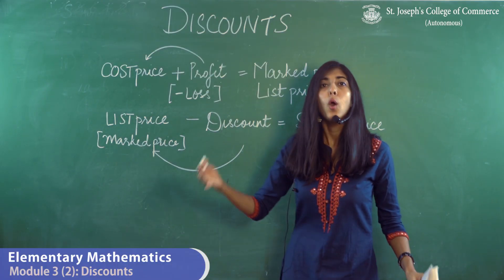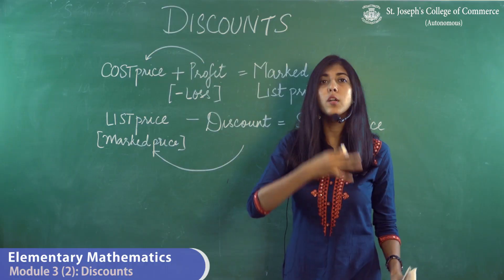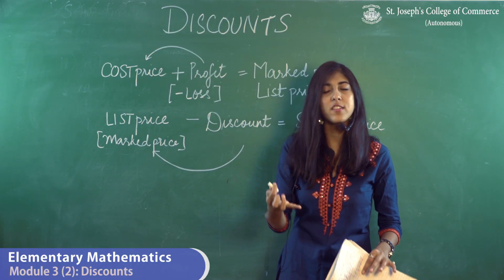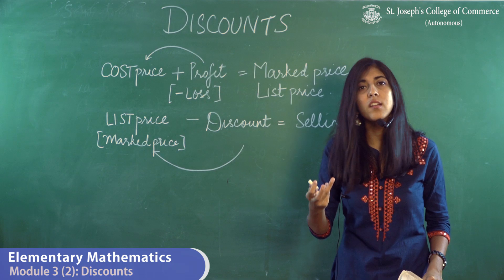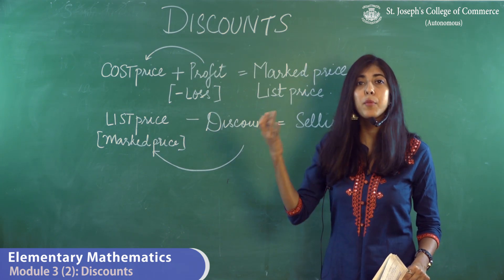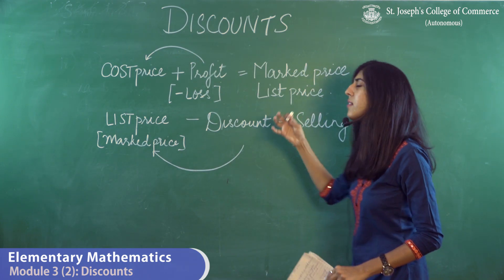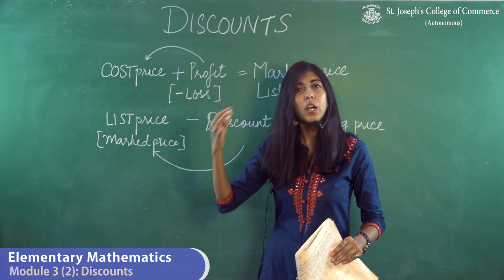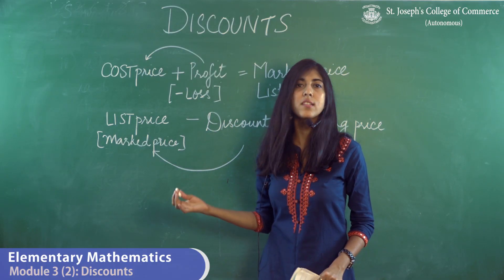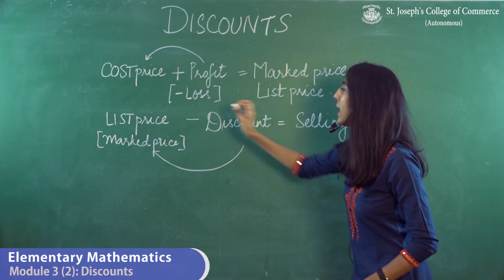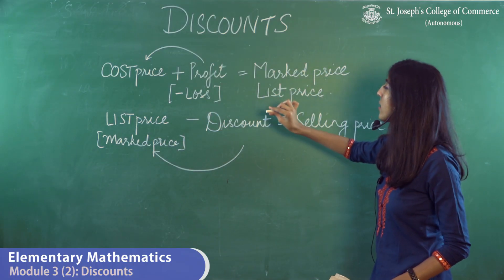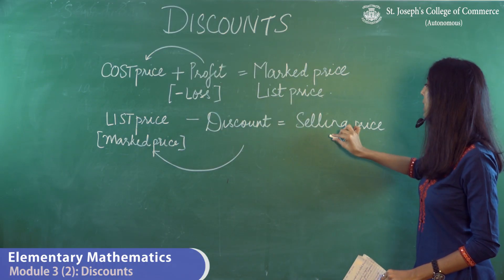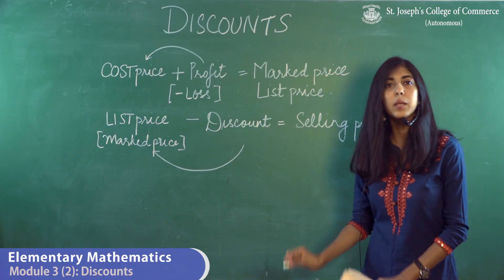Next, in a shop, when a customer approaches a retailer, there are certain cases — during festivals or for regular customers — where the retailer at his discretion will offer a cash or trade discount. From the mark price or list price, a certain percentage discount amount is deducted, and the final price the customer pays is called the selling price.